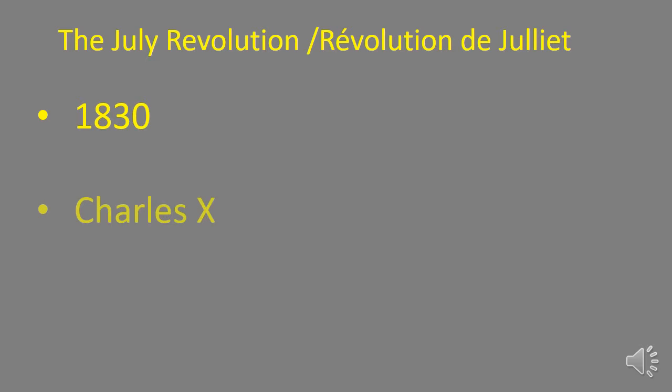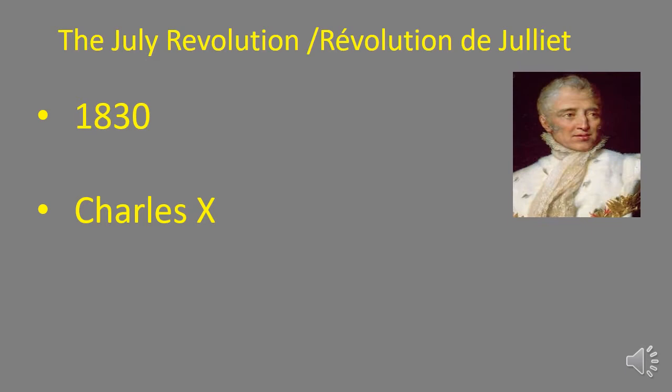What was this revolution? It happened in 1830 in France, when the king was Charles the 10th. If you stop to think, you will remember that Napoleon was defeated in 1815, and the Congress of Vienna was also held that year. One of the principles of the Congress of Vienna was the principle of legitimacy — remember that all the monarchies were restored. One of the monarchies restored was the Bourbon dynasty, and the king was Charles the 10th at the time of this revolution. 15 years had elapsed from the last defeat of Napoleon, and in France, we have another revolution.